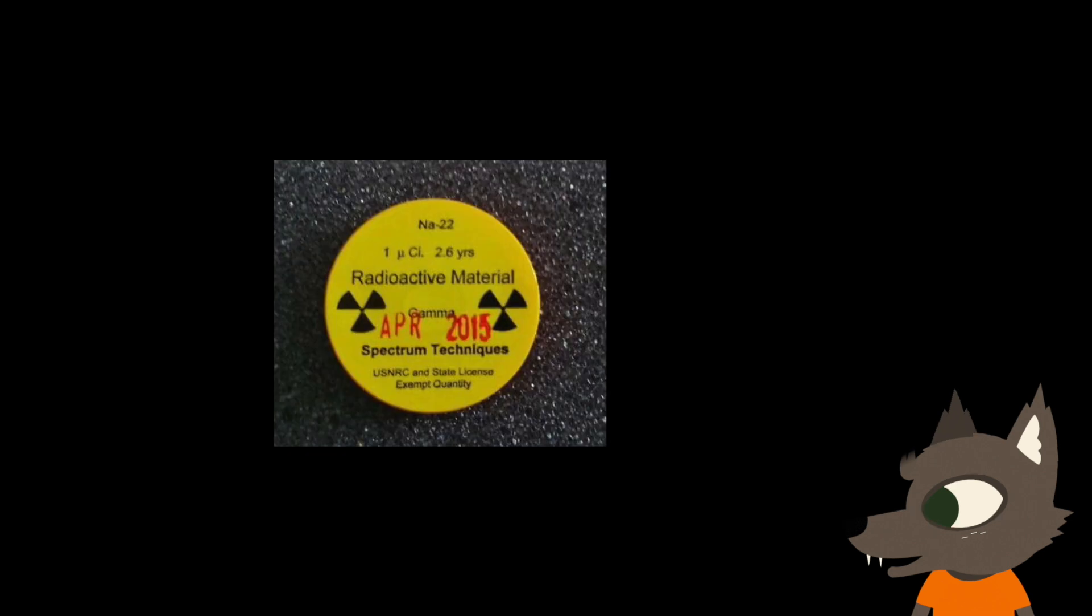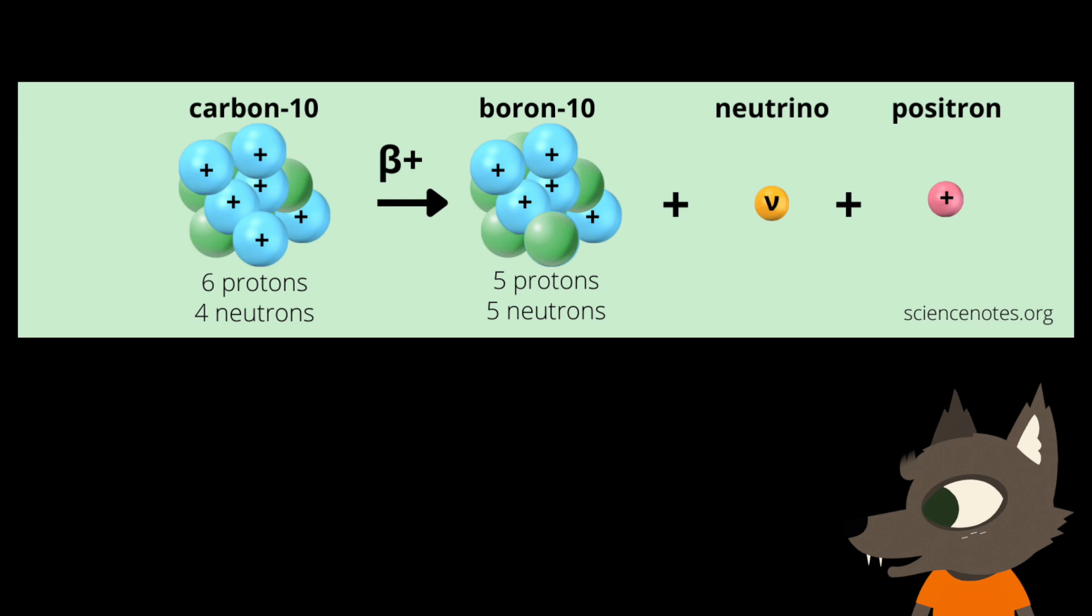The easiest way to make antimatter is by beta-plus decay of the isotope sodium-22. Beta-plus decay is a type of radioactive decay where a proton in the nucleus of an atom is converted into a neutron. In order to conserve charge during the interaction, it also creates and ejects a positron, which is the antimatter counterpart of an electron. It also creates and ejects a neutrino to conserve quantum number, but we won't be able to detect those since they're not charged.